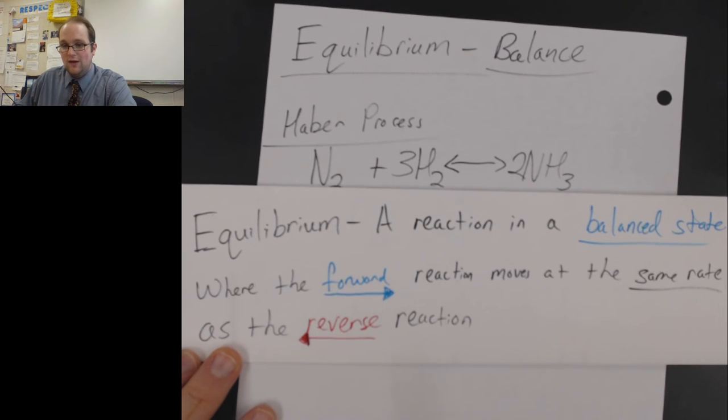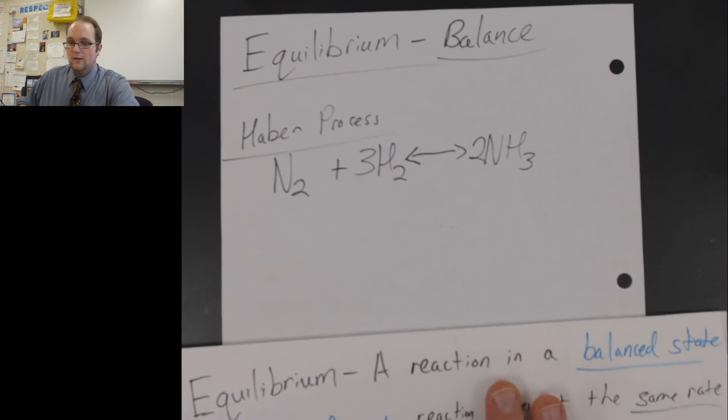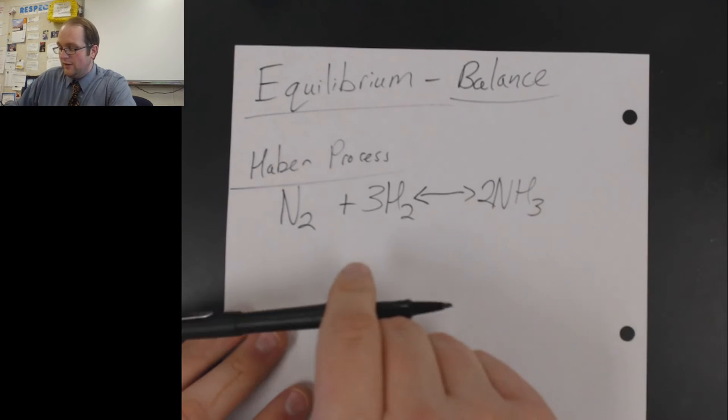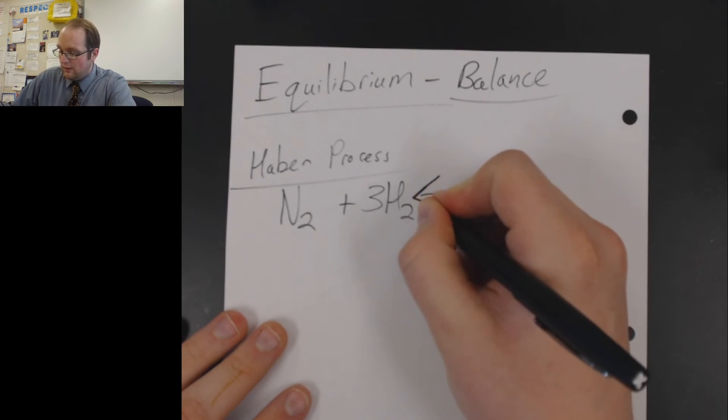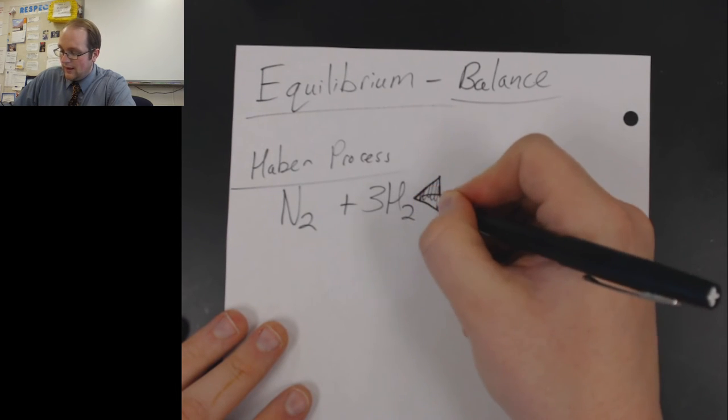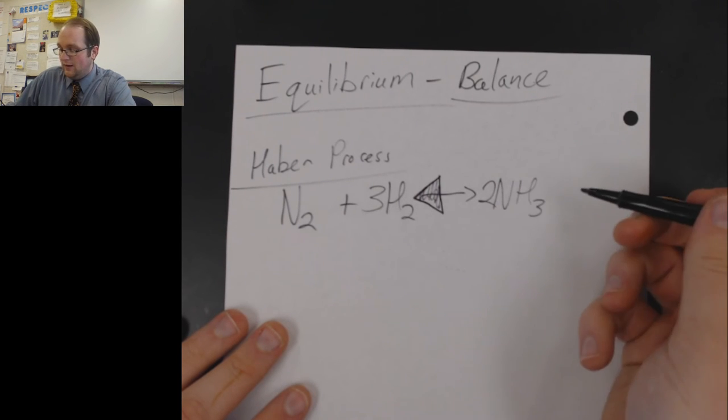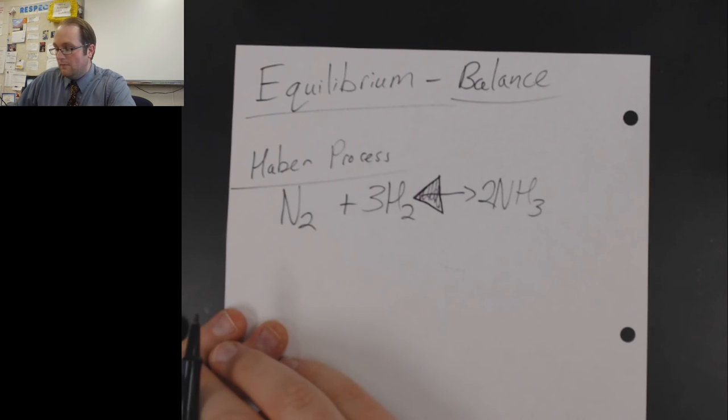If you need a second, pause the video here so you can get this definition. I want to talk just a little bit more about this reaction. Fritz noticed that the reason why it was going so slow is because this side of the reaction—the reverse reaction—was a lot stronger than the forward side. The NH3 was breaking down so fast that even as much as you tried to make more, it just couldn't keep up.